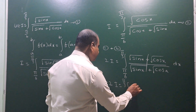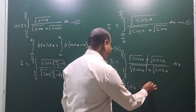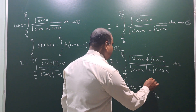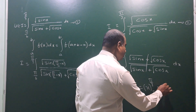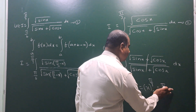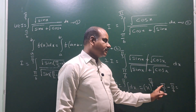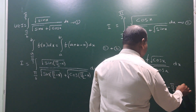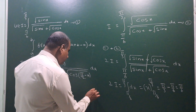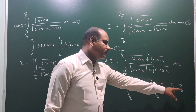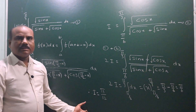So 2I = integral from π/6 to π/3 of dx = [x] from π/6 to π/3. Applying limits: upper limit π/3 minus lower limit π/6 = 60 - 30 = π/3 - π/6 = π/6. Therefore 2I = π/6, and finally I = π/12.